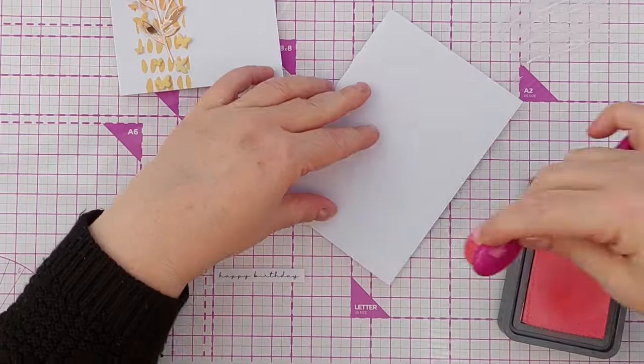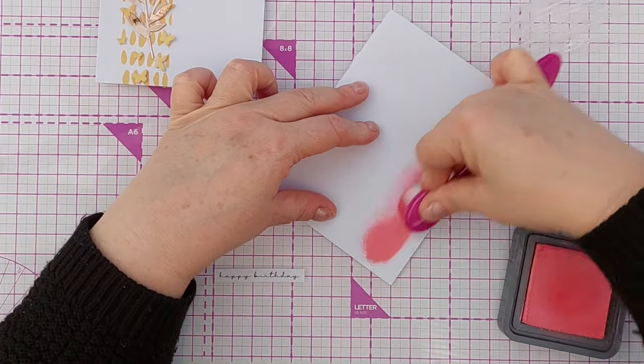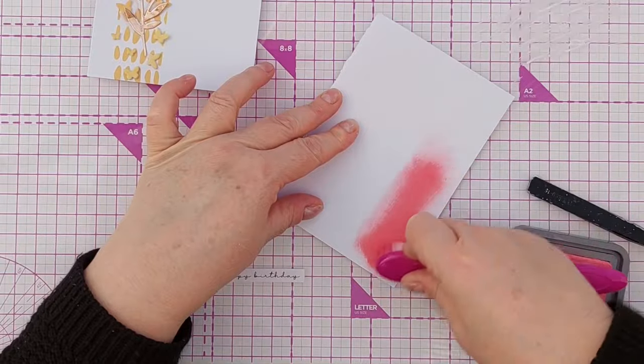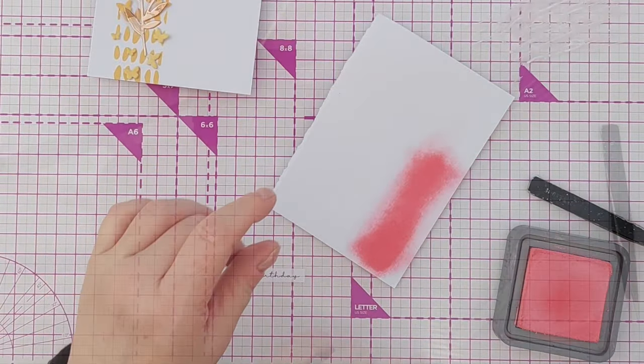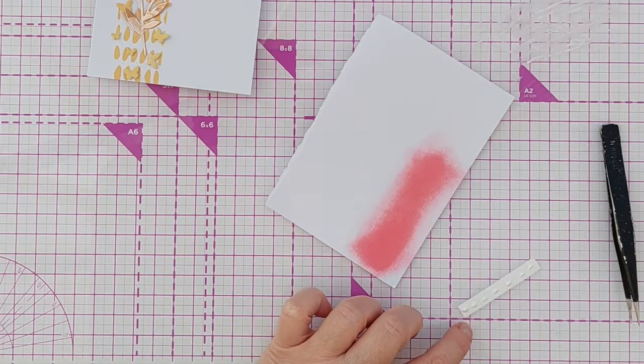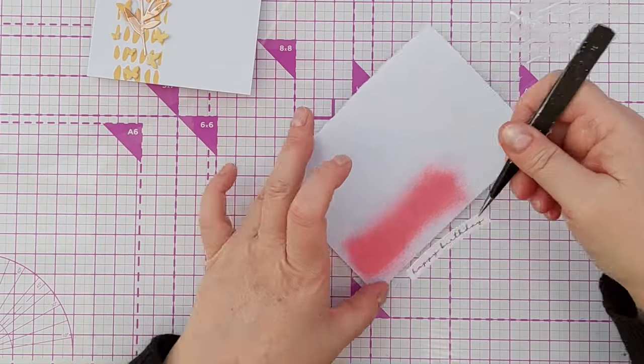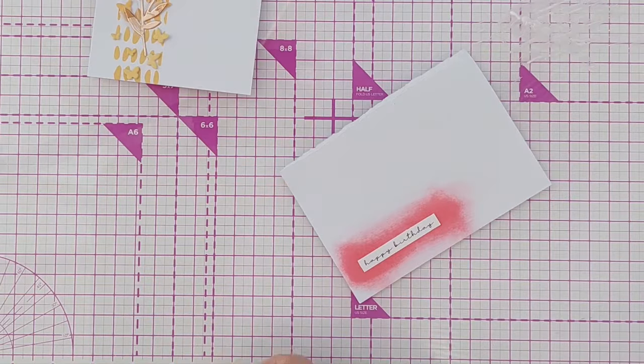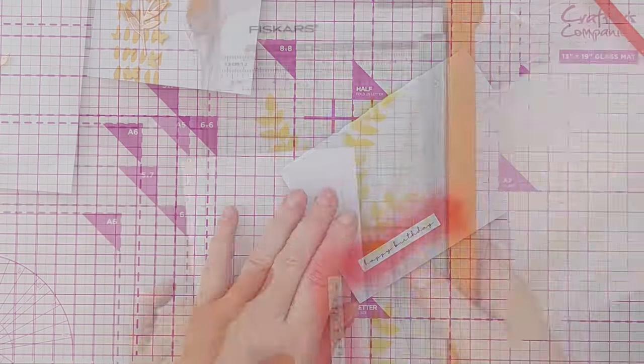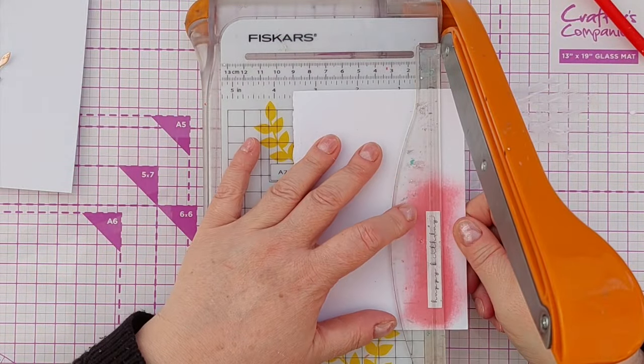For my sentiment I chose a pre-printed happy birthday in a scripty font. I added some of the worn lipstick onto another piece of card and then glued my happy birthday onto that and used my guillotine to trim it out so that it had a little worn lipstick colored border around it.